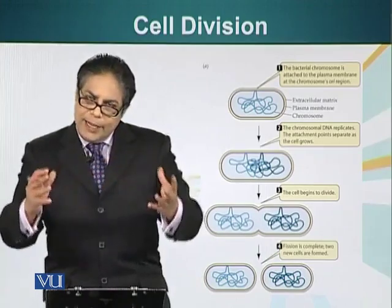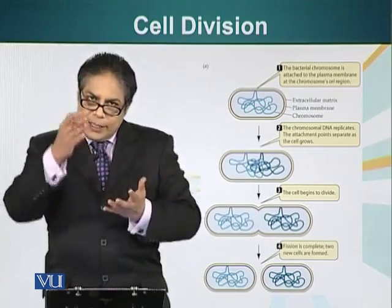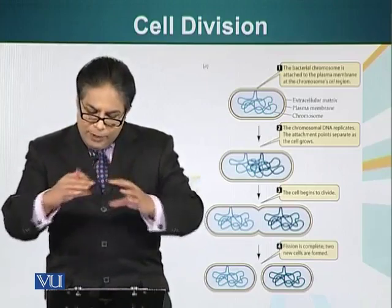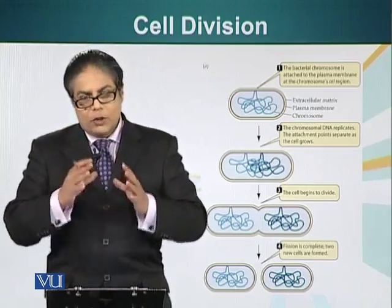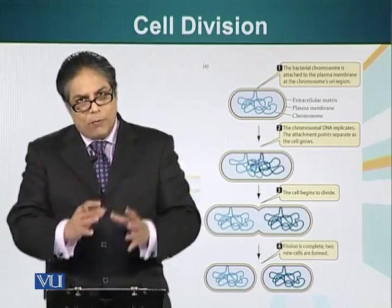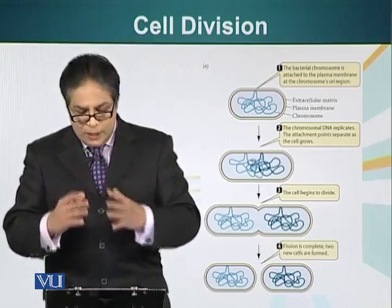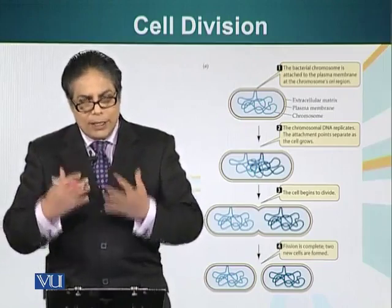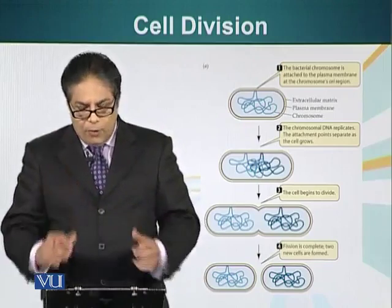Once DNA replication is complete, a cell wall and membrane will form, separating the two cells. So initially we had one cell, and from one cell we have gone to two cells in this process. We will look at this process in multicellular organisms in a later module.